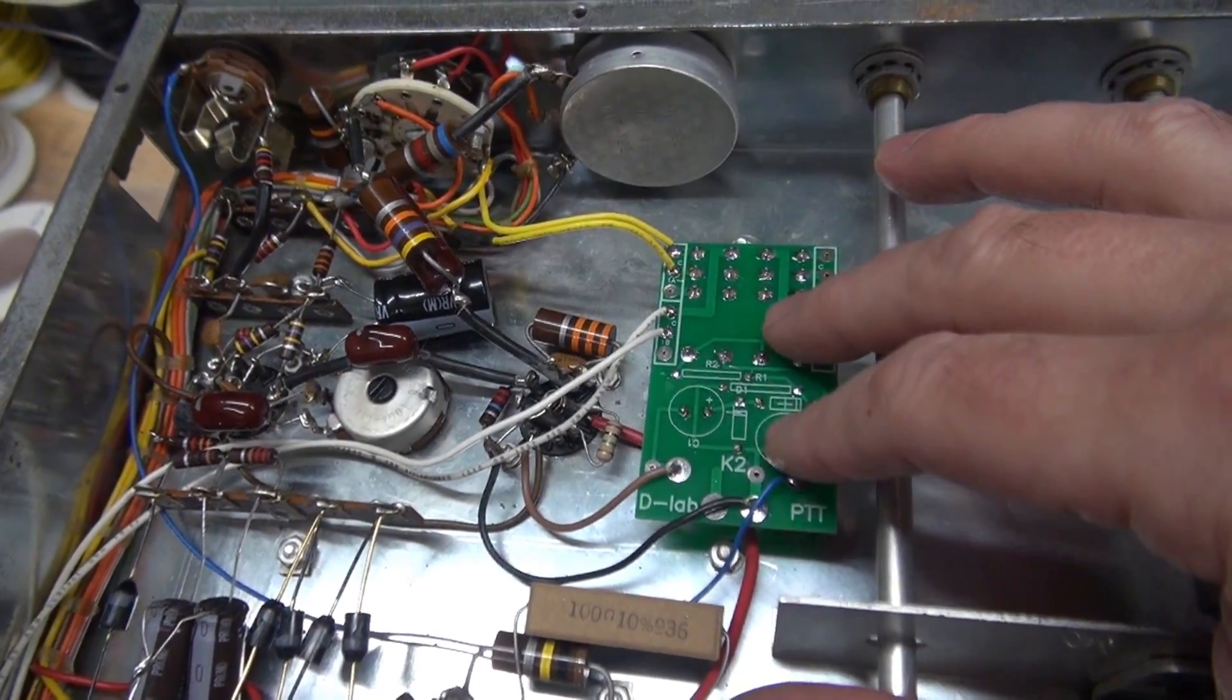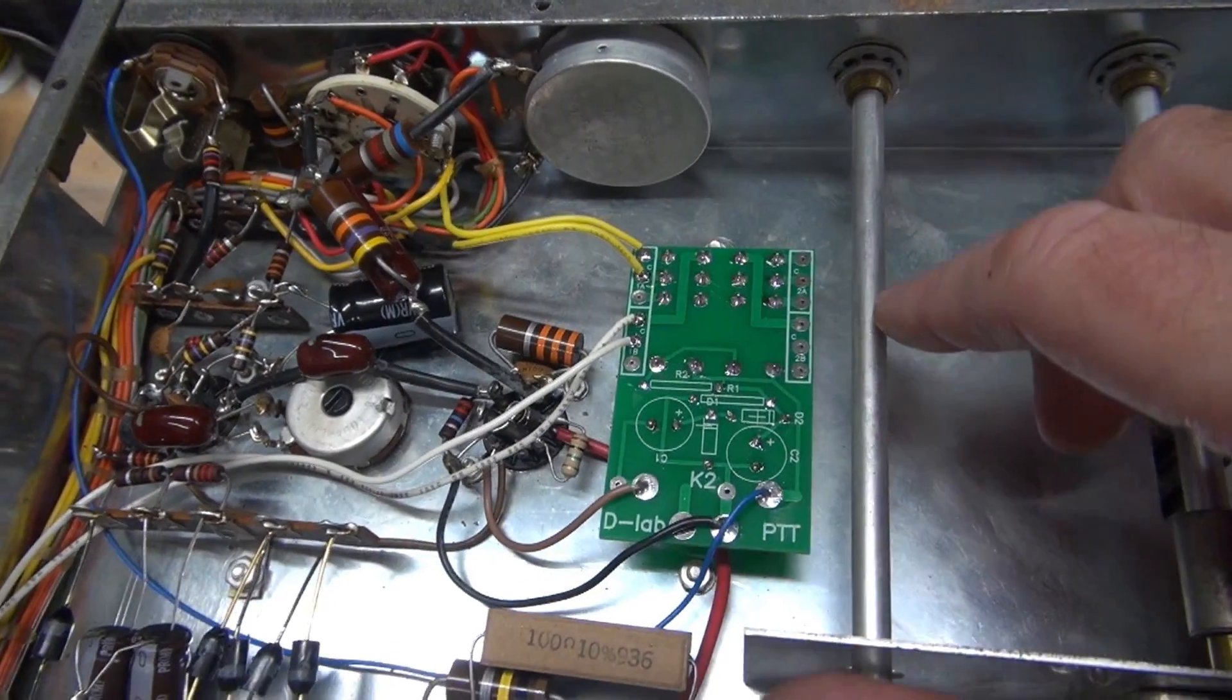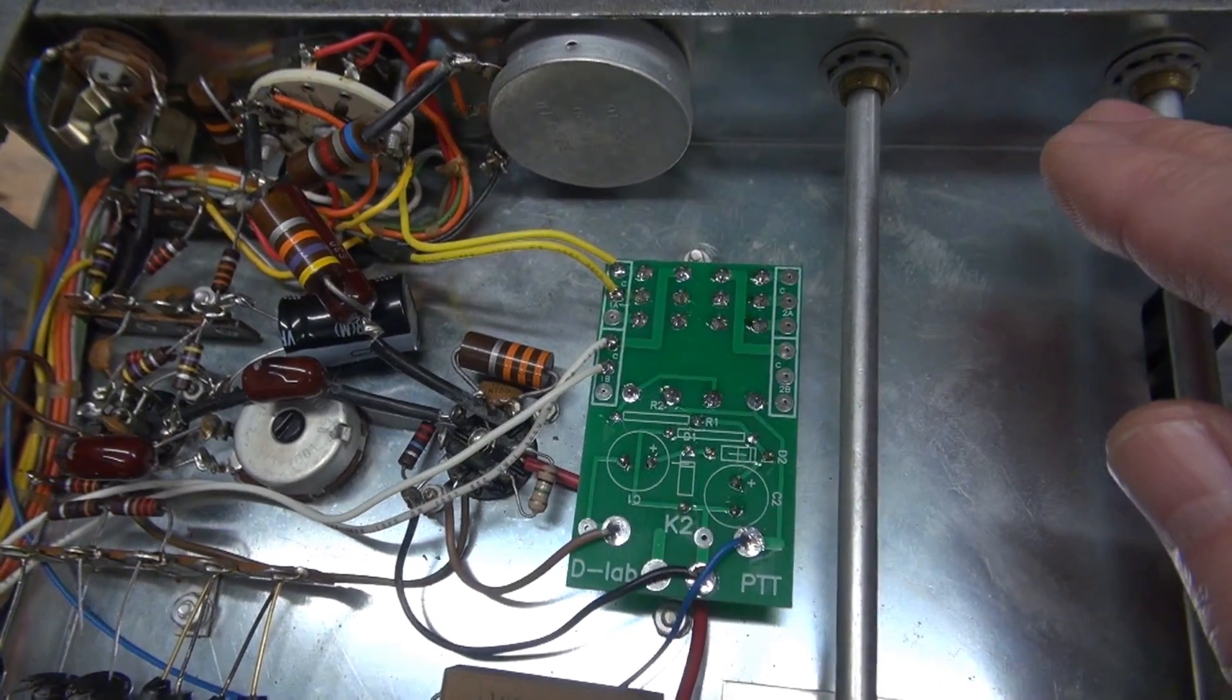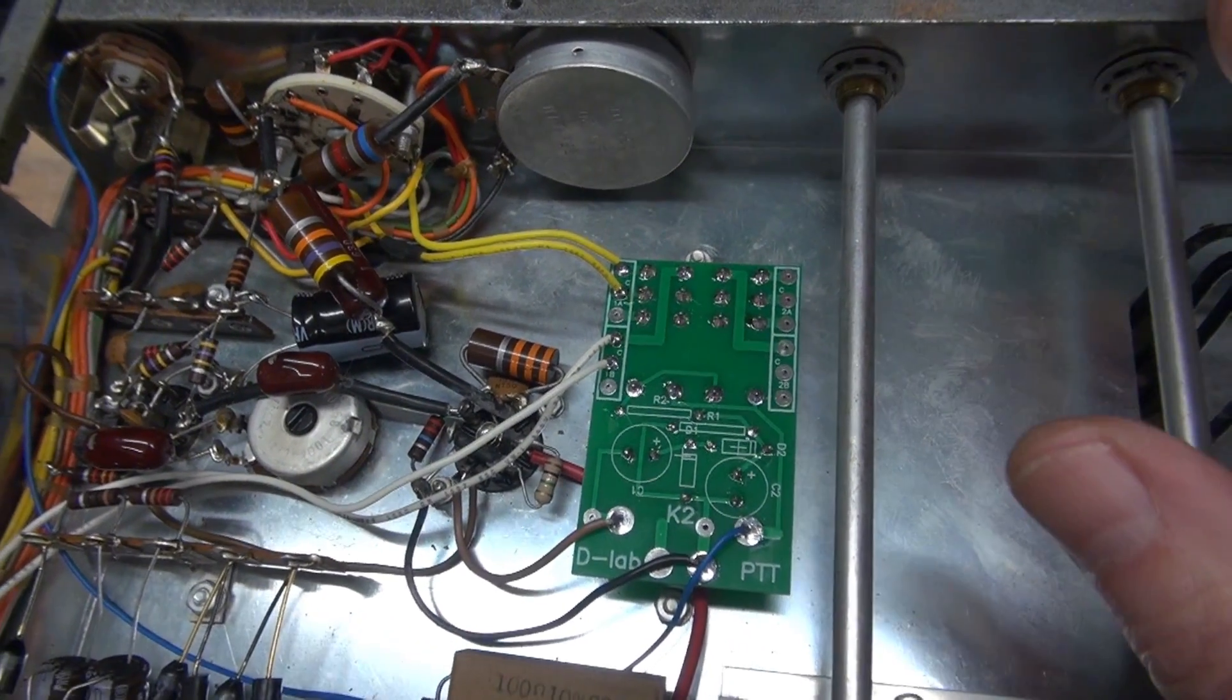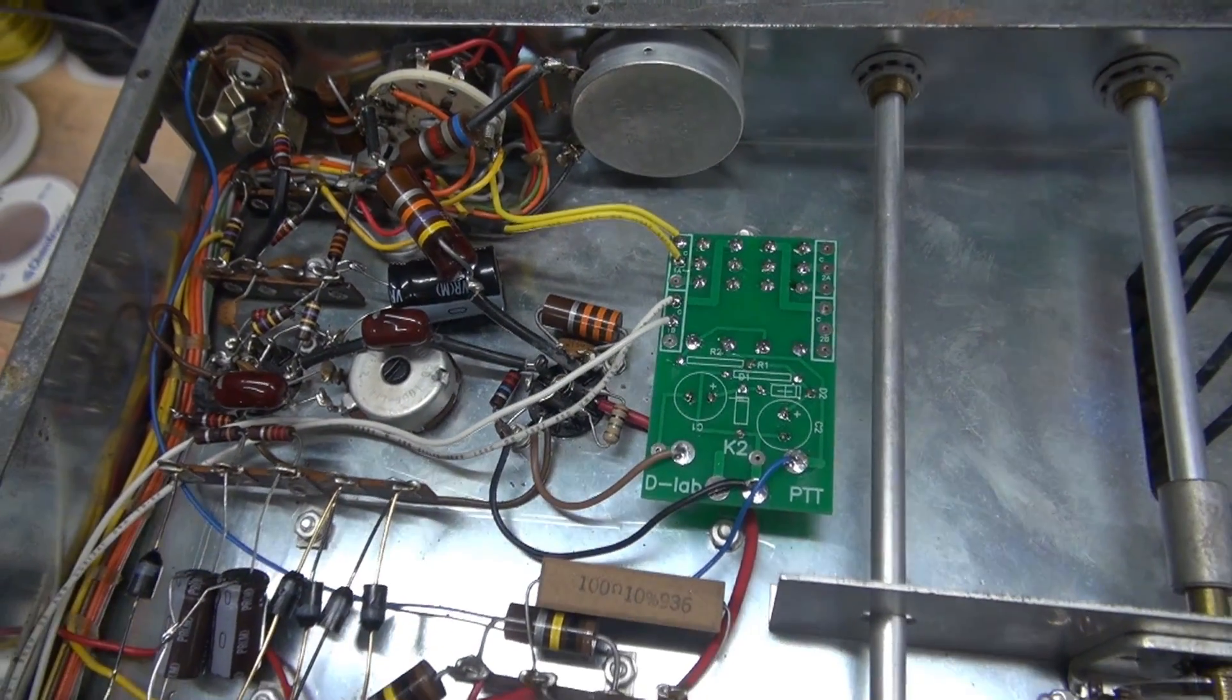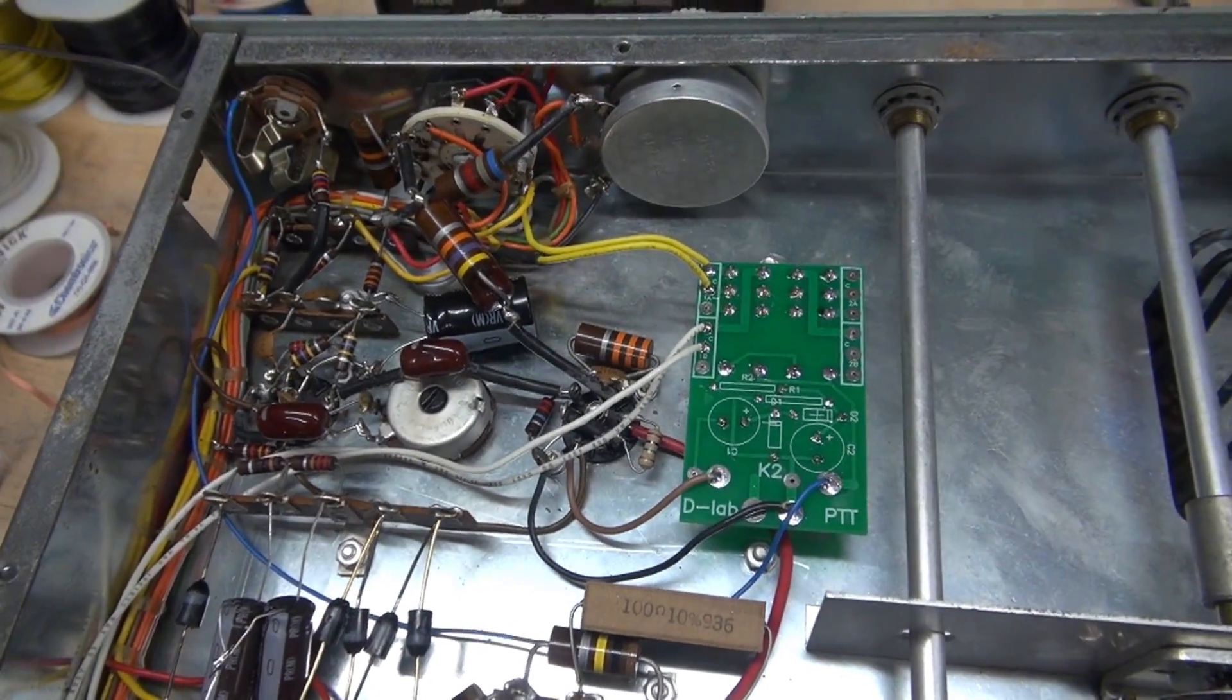So this enables push to talk function. Now we also have two sets of auxiliary contacts which we'll utilize here in just a little bit. First, I want to go ahead and hook up the transmitter into a dummy load and make sure what we've done so far works.